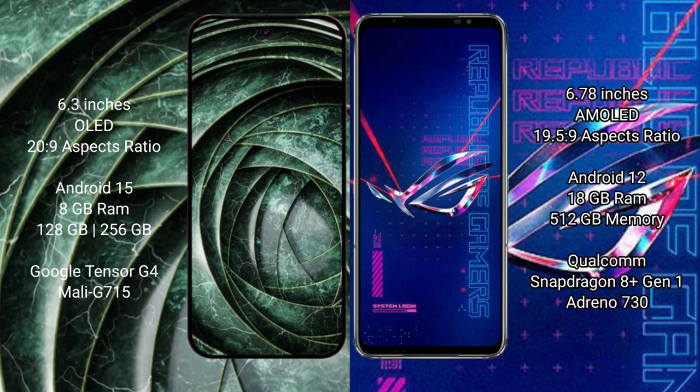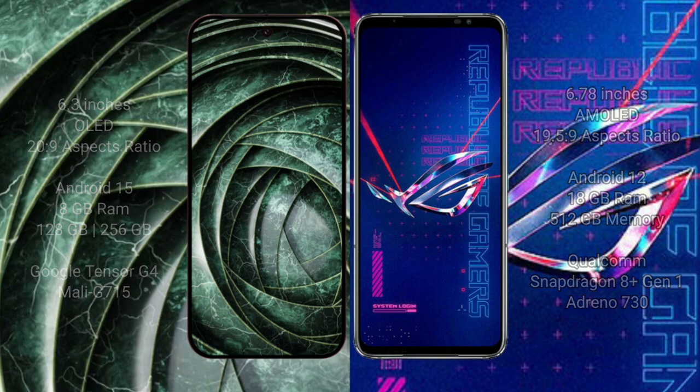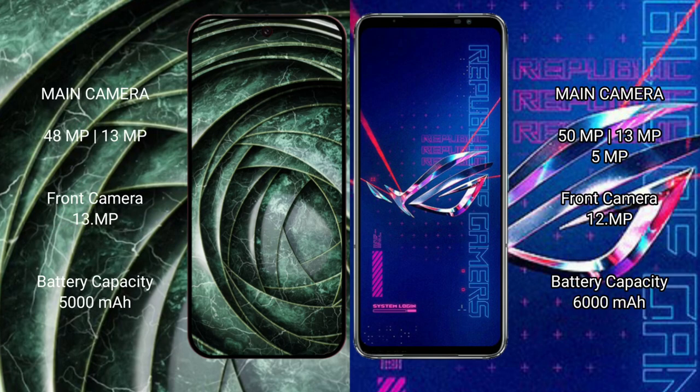The ASUS ROG Phone 6 Pro comes with 8GB RAM and 512GB internal storage, powered by the Qualcomm Snapdragon 8 Gen 1 processor with an Adreno 730 GPU. The Google Pixel 9a features a dual rear camera setup with a 50MP main camera and a 13MP ultrawide camera.